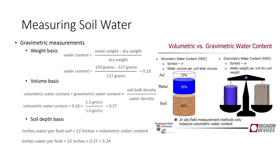A meteorologist measures rain in inches of water, and irrigation is measured in inches as well. Inches of water is a convenient, easily visualized unit that can also be used to measure the amount of water in a soil. Imagine taking one cubic foot of soil and squeezing all the water out into a one-square-foot cake pan — how many inches of water would be in that pan? This can be calculated by the equation: inches of water per foot of soil equals 12 inches times volumetric water content.